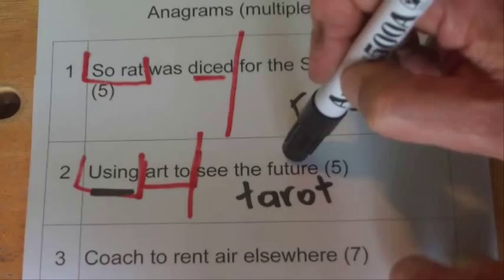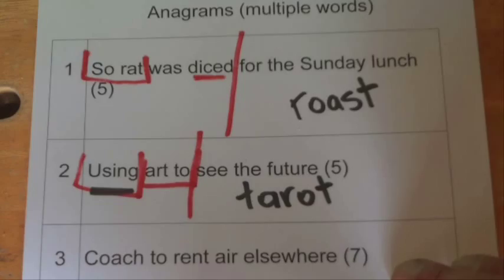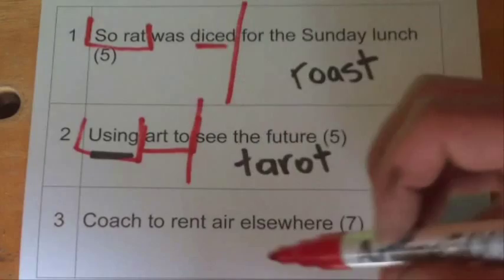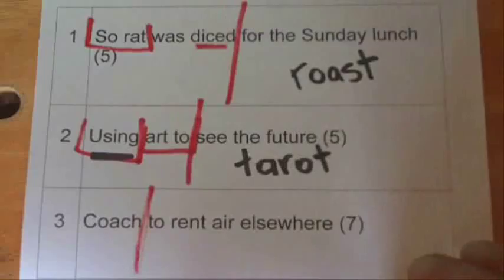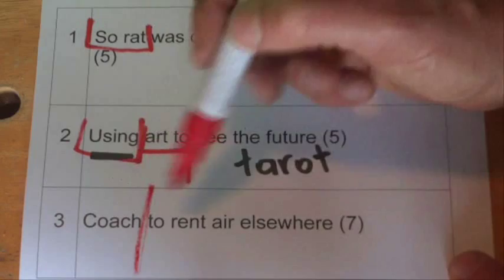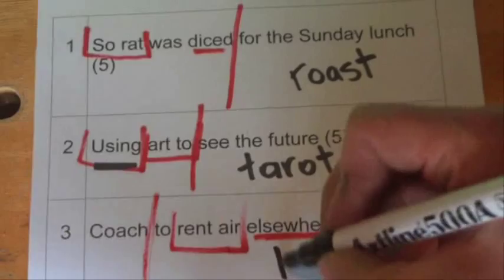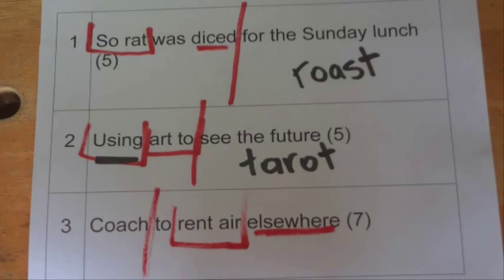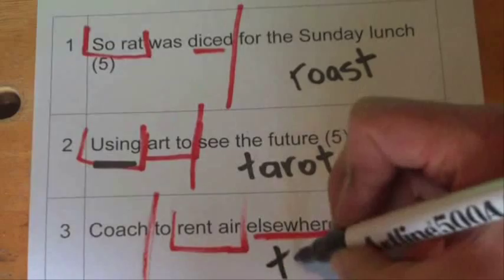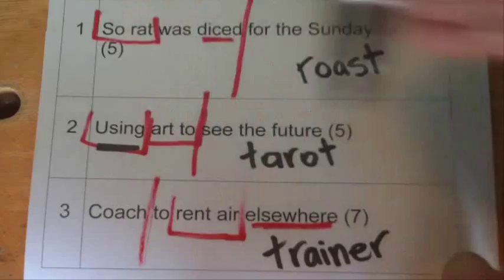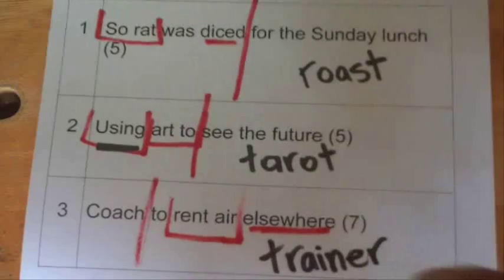Our final clue: 'coach to rent elsewhere.' Splitting it, we've got 'coach' and 'to rent elsewhere,' where 'elsewhere' is another anagram indicator meaning to break up or bust up. Taking the letters from 'rent air,' we need another word to mean coach — and if we split up those letters we come up with the word TRAINER. Trainer is an anagram of 'rent air' and also means a coach. So there are a couple of tips and tricks for solving anagram cryptic crossword clues with multiple words. Thank you, bye.